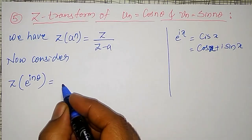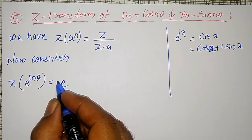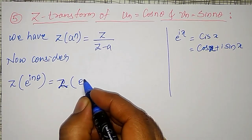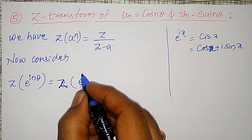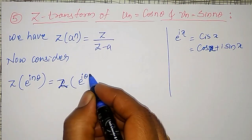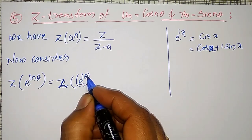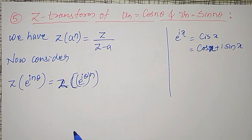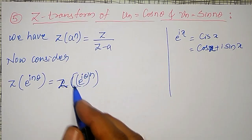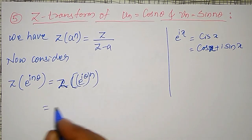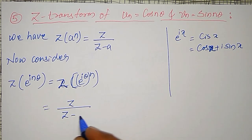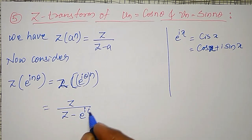I can write this as the Z transform of e to the power iθ, to the power n. This is my 'a' now, according to the formula. Therefore I can write it as Z divided by Z minus e to the power iθ.